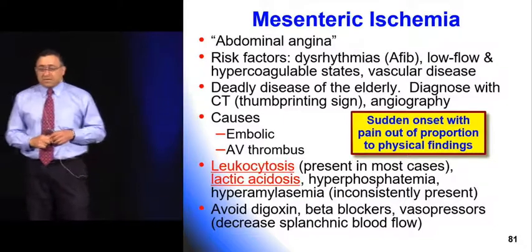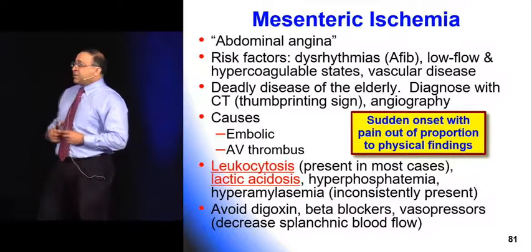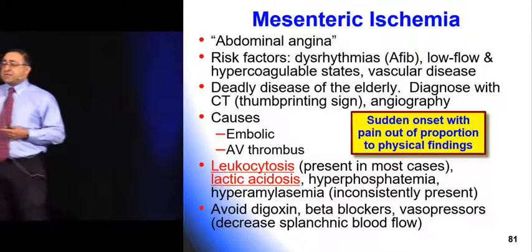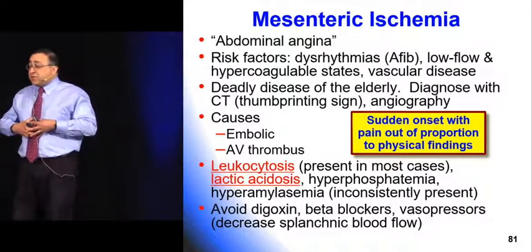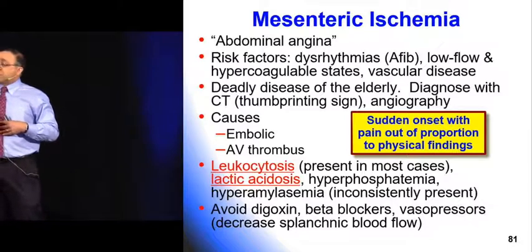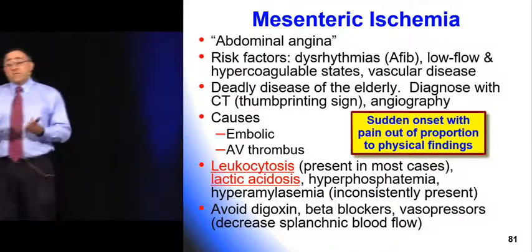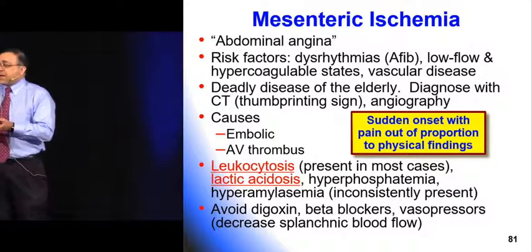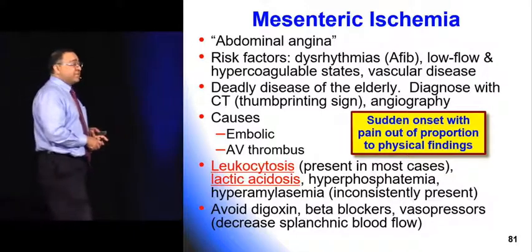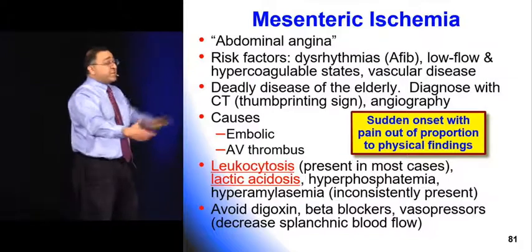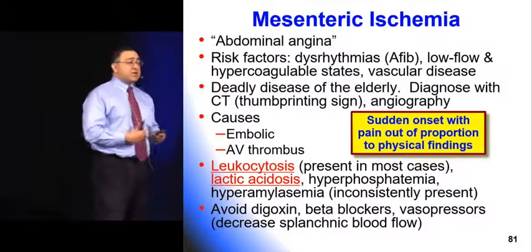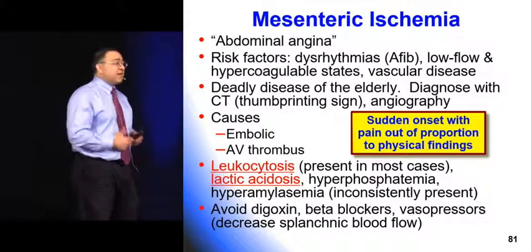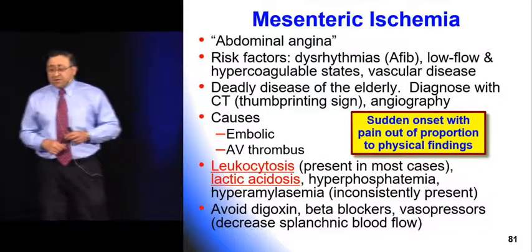The typical patient has either a low-flow state — like severe cardiomyopathy, multiple MIs — causing clots in the heart that embolize, or atrial fibrillation putting them at risk for embolization. Any AFib patient who develops abdominal pain, or a patient on pressors for sepsis who develops abdominal pain — for example you've got a patient in septic shock on norepinephrine and they develop abdominal pain — that's a low-flow state; think mesenteric ischemia.